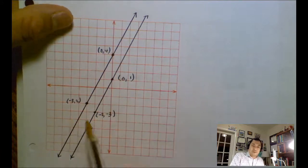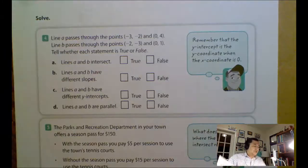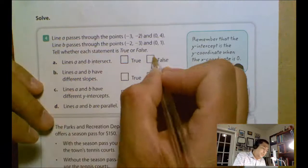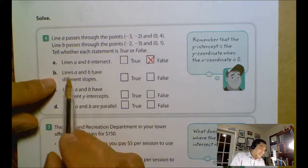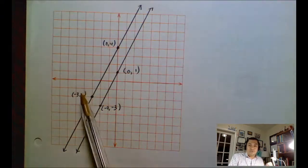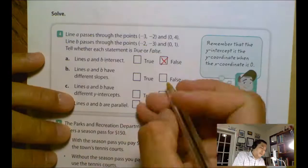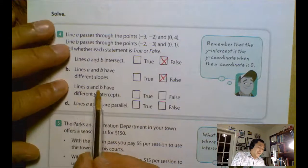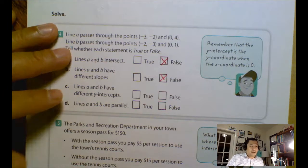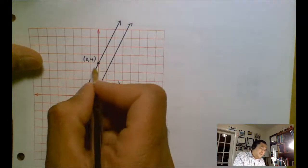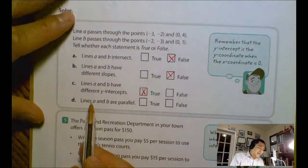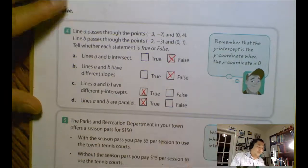Lines A and B intersect each other - they are parallel lines, so there is no way they are going to intersect each other. Lines A and B have different slopes - if you have parallel lines, the slopes are the same, so this is also false. Lines A and B have different y-intercepts - that one is true because one is 0, 1 and the other is 0, 4. This one is true. And finally, lines A and B are parallel. That one is also true.